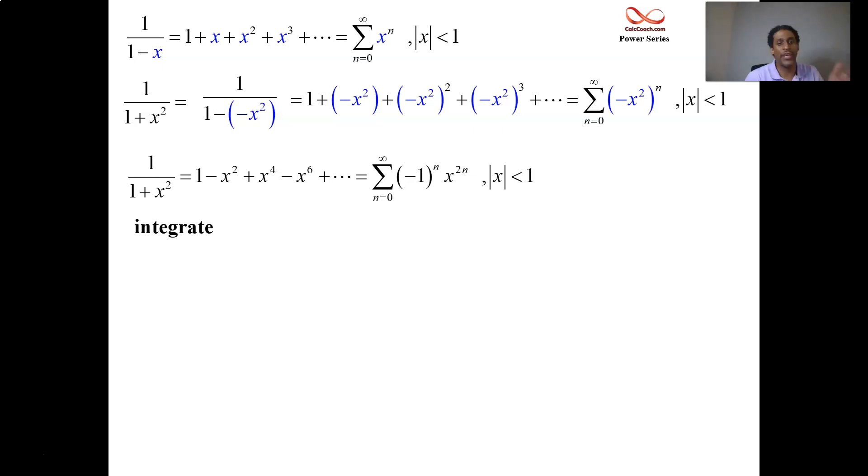We integrate the function. We can integrate term by term. We can integrate the series. The integral of 1 over 1 plus x squared is arctan. And so the left-hand integral is arctan of x plus a random constant.